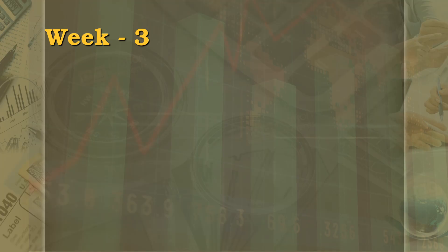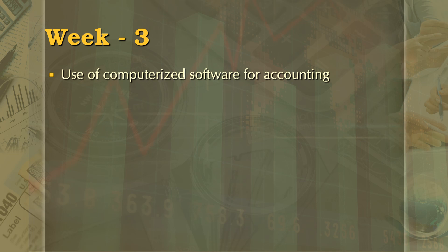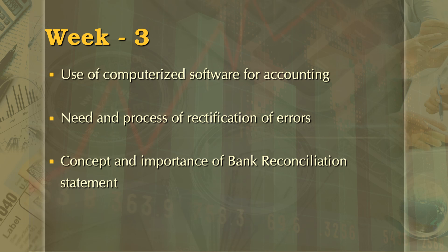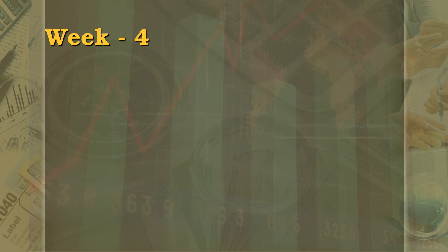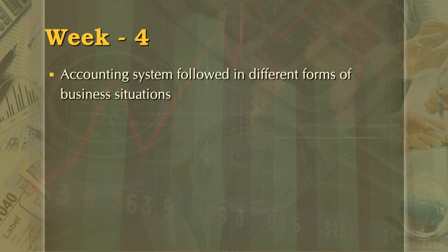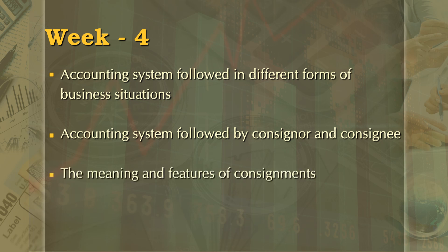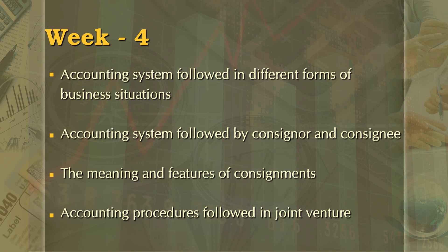If you understand these sessions thoroughly, then understanding the accounting system in any form of organization becomes an easy task. Sessions during the third week will deal with use of computerized software of accounting, need and process of rectification of errors, and lastly the concept and importance of bank reconciliation statement. Week 4 will deal with accounting system followed in different forms of business situations, covering accounting followed by consigner and consignee, along with the meaning of consignment and its features, and accounting procedures followed in joint venture.